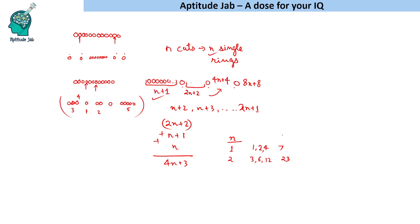With two cuts, pieces of 3, 6, 12 plus two individual rings gives a maximum payment of 23. With three cuts, the smallest piece is 4, then 8, 16, 32, plus three single pieces, giving a maximum of 63. So the maximum payments for 1, 2, 3 cuts are 7, 23, 63 and so on.